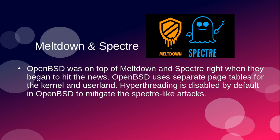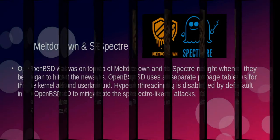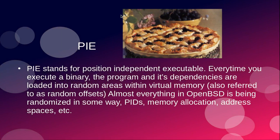Hyperthreading is disabled by default, and Linux decided to adopt that after the OpenBSD team did. PIE stands for Position Independent Executable. Every time you execute a binary, the program and its dependencies are loaded into random areas within virtual memory, also referred to as random offsets. Almost everything in OpenBSD is being randomized in some way — PIDs, memory allocation, address spaces, etc.